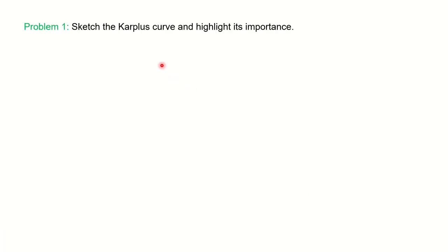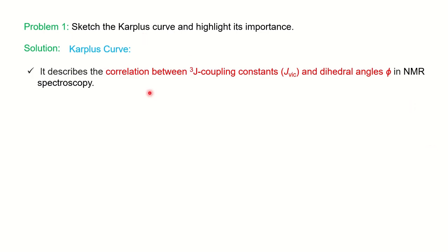Our question is: sketch the Karplus curve and highlight its importance. We will also see an application-based question at the end. The Karplus curve describes the correlation between the 3J coupling constant — called vicinal coupling — and the dihedral angle in NMR spectroscopy.